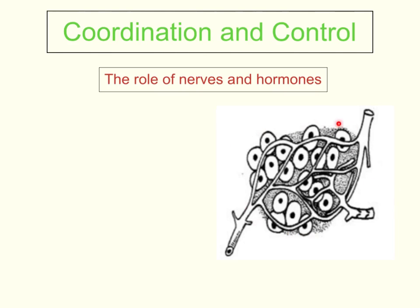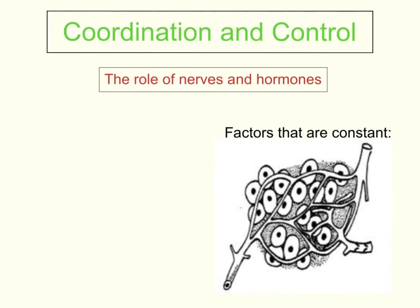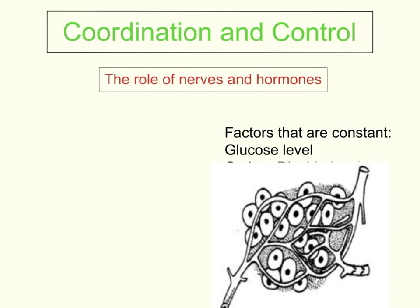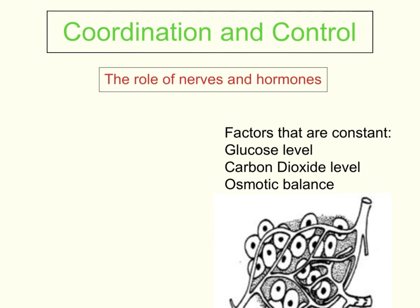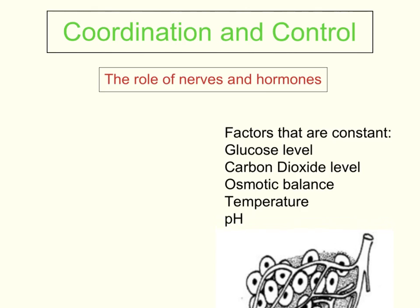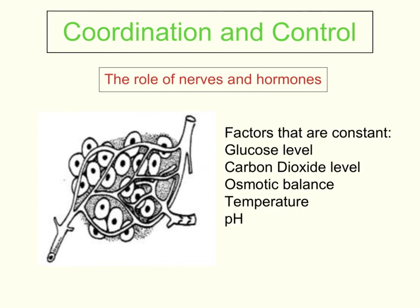I've got here an example of a group of cells and some capillaries from inside a multicellular organism. Inside a multicellular organism, cells are surrounded by tissue fluid, and this tissue fluid needs to have a relatively constant composition. The factors that need to be constant include glucose level, carbon dioxide level, osmotic balance, temperature, and pH. The regulation of these things is controlled by nerves and hormones, and it involves communication between organs and systems.